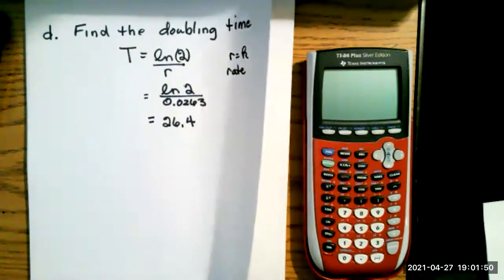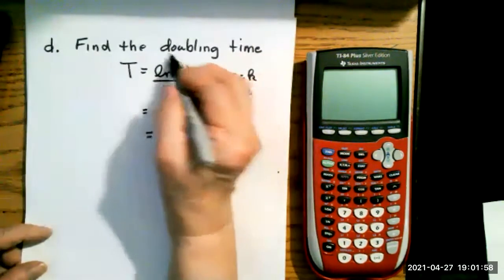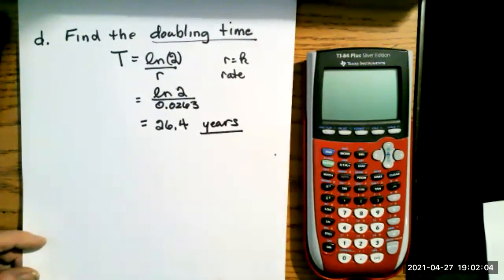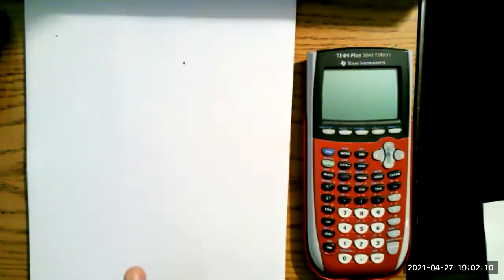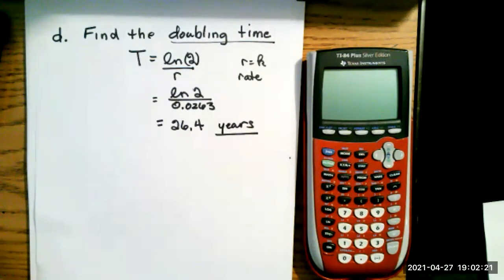Put ln2 divided by 0.0263 in your calculator and you get 26.4 years. The doubling time question asks how many years, not what year, so you don't add it back to 2012. All of those formulas are found on the formula sheet, but I'll write them down for each problem as we go.